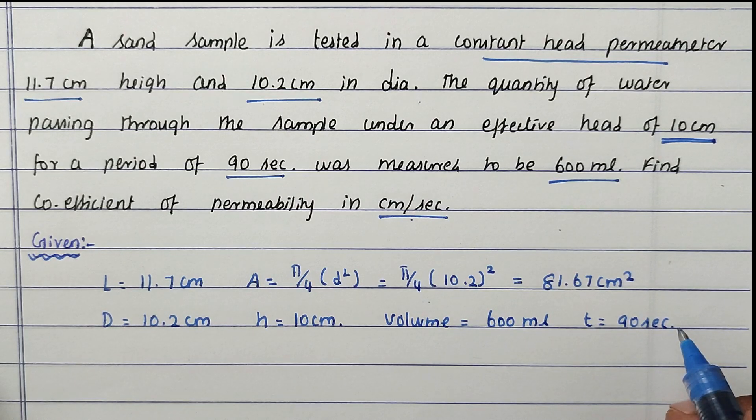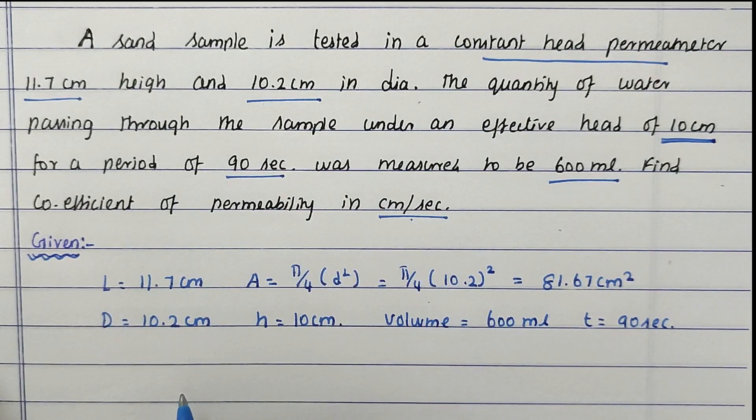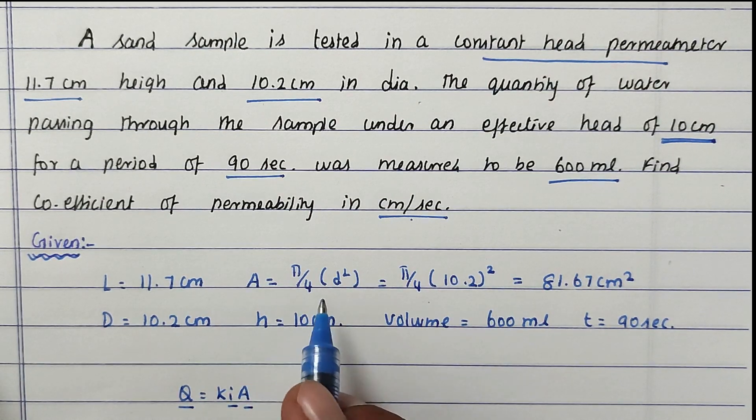We have to find out the coefficient of permeability. For constant rate permeability, Q = kiA. We know Q value, then i value we have to find out, and the area we know.